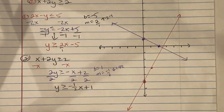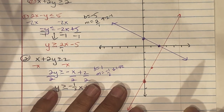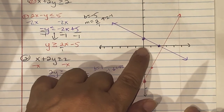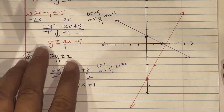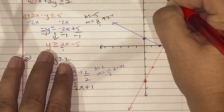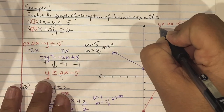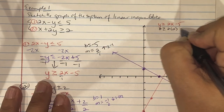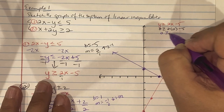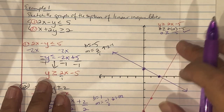To determine shading, figure out which ordered pairs are solutions. Notice neither graph line went through the origin, so test (0, 0). For the first equation, y ≥ 2x − 5: replace x and y with zero, giving 0 ≥ −5. That is a true statement, so on the first line we shade above the line.